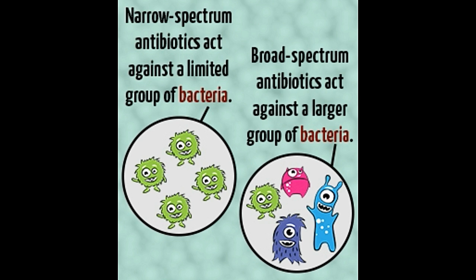Antibiotics prescribed for a bacterial infection can either be a broad spectrum or a narrow spectrum antibiotic, depending upon its efficacy in targeting the different types of bacteria. We usually notice that a doctor prescribes an antibiotic even without conducting a blood test to identify the type of bacteria. In these cases, the medication given is a broad spectrum antibiotic which works against a larger group of bacteria. The following sections elaborate more on the differences between narrow spectrum and broad spectrum antibiotics, allowing us to understand the details of both types in a better and easier way.